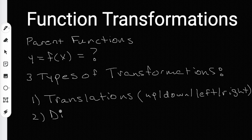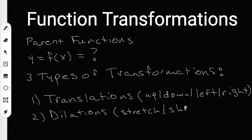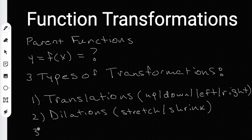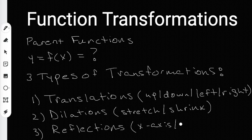The second type is called dilations. Dilations mean you're either stretching or shrinking a function. If you've ever been to an eye doctor and he said we're going to dilate your pupils, that means he's going to shine a light that makes your pupils stretch. So a dilation means you're either growing and stretching, or you're shrinking, also known as contracting. The third type is reflections. We usually reflect over a line — you can reflect over the x-axis or the y-axis.